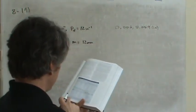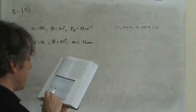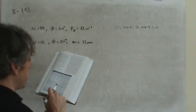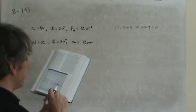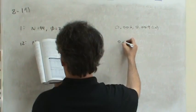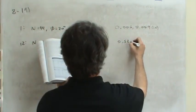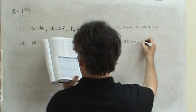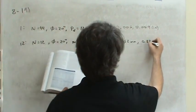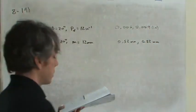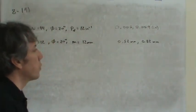And in the metric module, if you look up a metric module of 12, again, the center distance range is from 200 millimeters to 800 millimeters. And so there would be 0.52 millimeters to 0.82 millimeters. And of course, just depending upon the center distance, you would determine which one of these is appropriate.